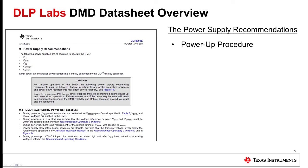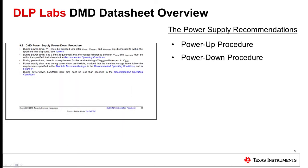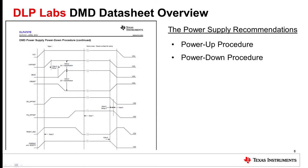Section 9 covers power supply recommendations. While the power-up and power-down sequencing is controlled by the DLP display controller, this section covers the power-up procedure as well as the power-down procedure. A timing diagram showing relative transitions of individual inputs is shown.